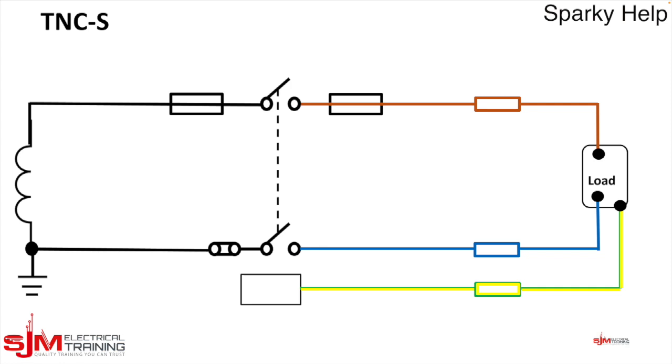We must always take an earth to every point and there we have it, there's our CPC so we have our line, neutral and CPC. But we need to make this a TNC-S and it literally comes out of that point and into the neutral link out of the side of the service cutout.